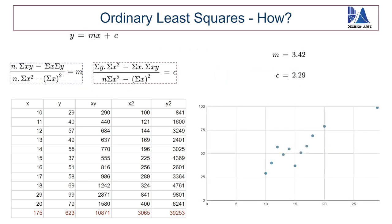If you plug in all the components, this is the value that you get for m and c. Now, let's keep m and c there for reference. And when we plot this into the scatter plot, this is the line that we get. So, Y equal to mx plus c, where m equal to 3.42 and c equal to 2.29.